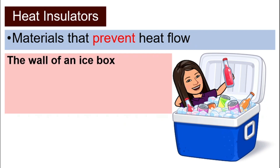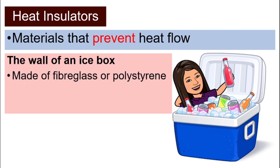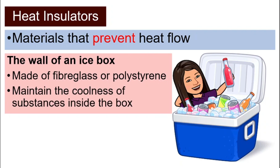Next, the wall of an ice box. The walls of an ice box are normally made of fiberglass or polystyrene. They can maintain the coolness of the substances inside the box. We normally store juice or canned sodas inside an ice box so that they stay cold, because the wall of the ice box can prevent heat from flowing in. The heat from the surrounding cannot flow into the ice box, and hence it is able to keep the juices inside cold.